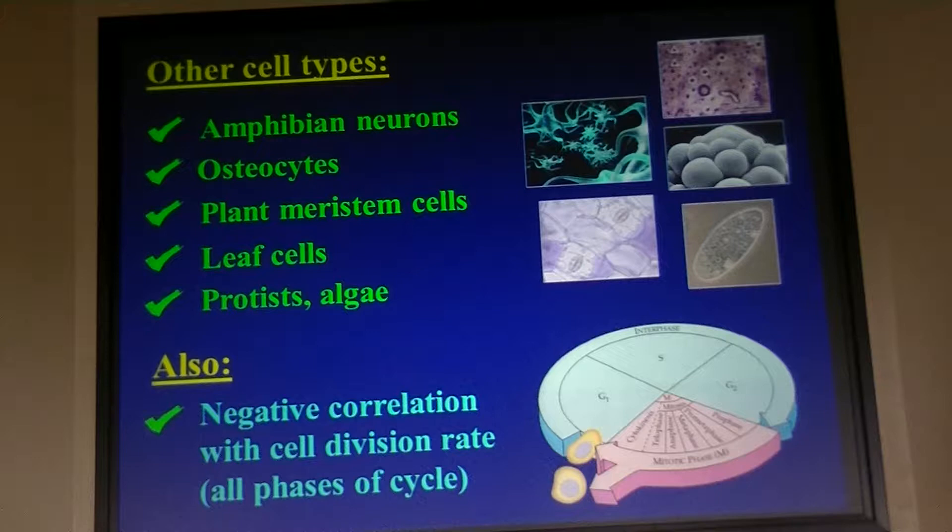The other major correlation you see across different species is not just cell size, which is a positive correlation, but a negative relationship between genome size and cell division rate. So the summary is: a large genome tends to be found in a large, slowly dividing cell.